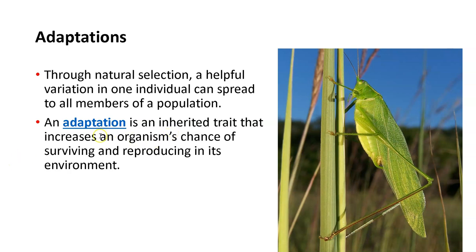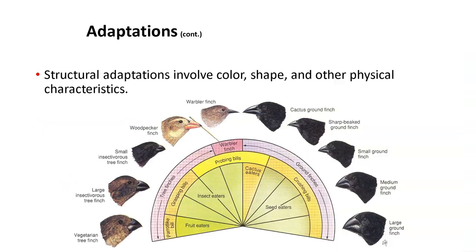These different beak sizes and fossils are all considered adaptations. An adaptation is an inherited trait that increases an organism's chance of surviving and reproducing — it increases the ability to survive, live, and pass those genes on through DNA to offspring. These are examples of some of the finches, and this diagram shows how tree finches eat different types of food — probing bills for finding things, and strong crushing bills for hard seeds. These are structural adaptations.